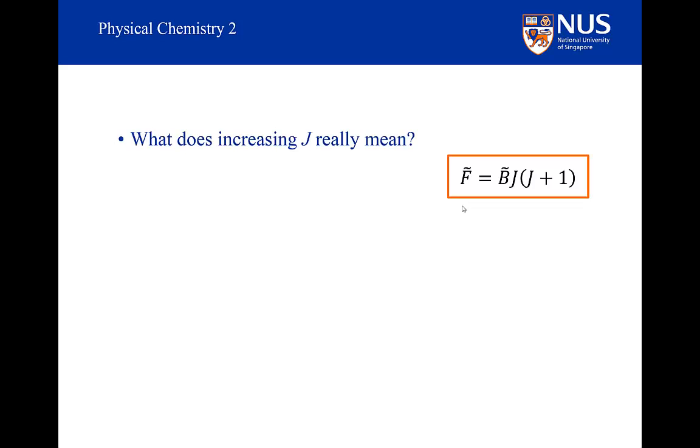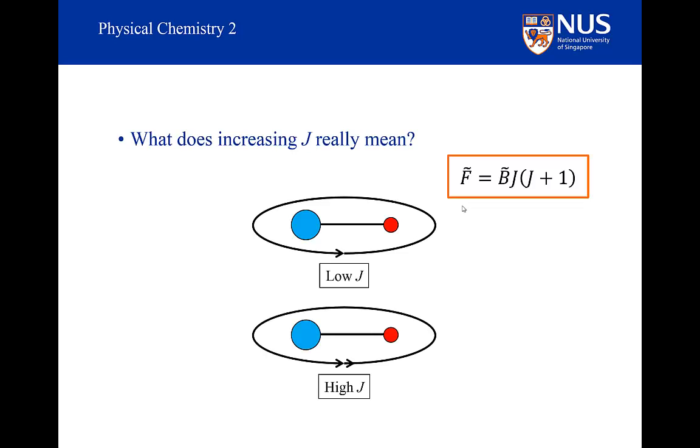What does increasing J really mean? As we can see, when we increase J, we are increasing the rotational energy. As we increase J, we are witnessing our molecule rotating faster. So that is what is going on at the molecular level.